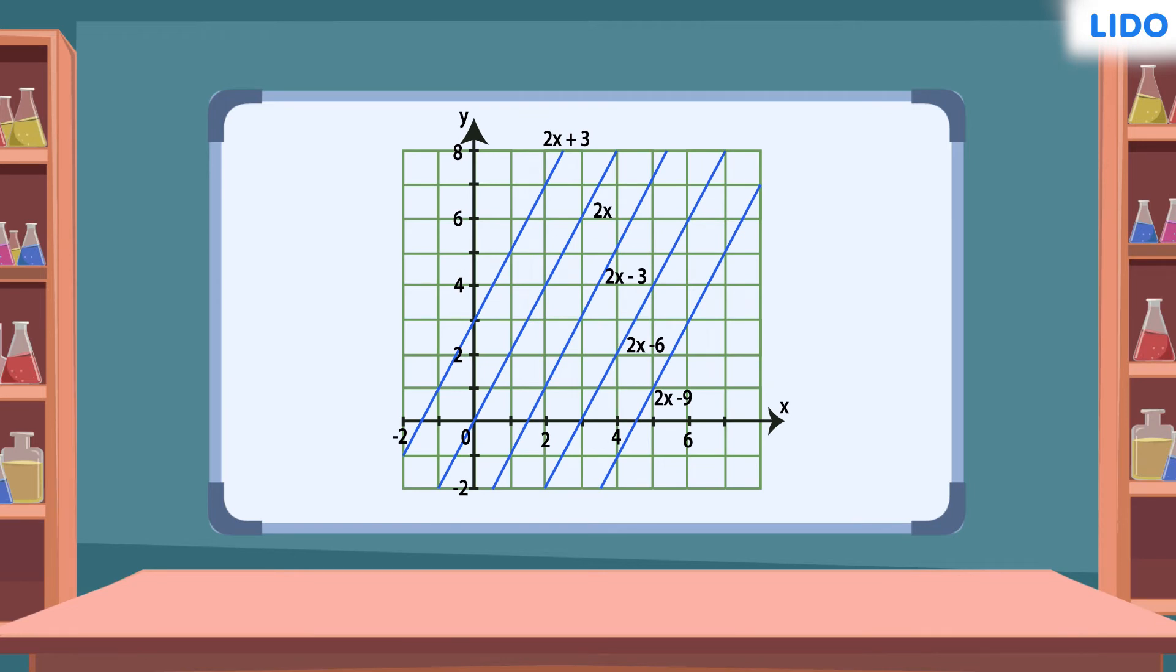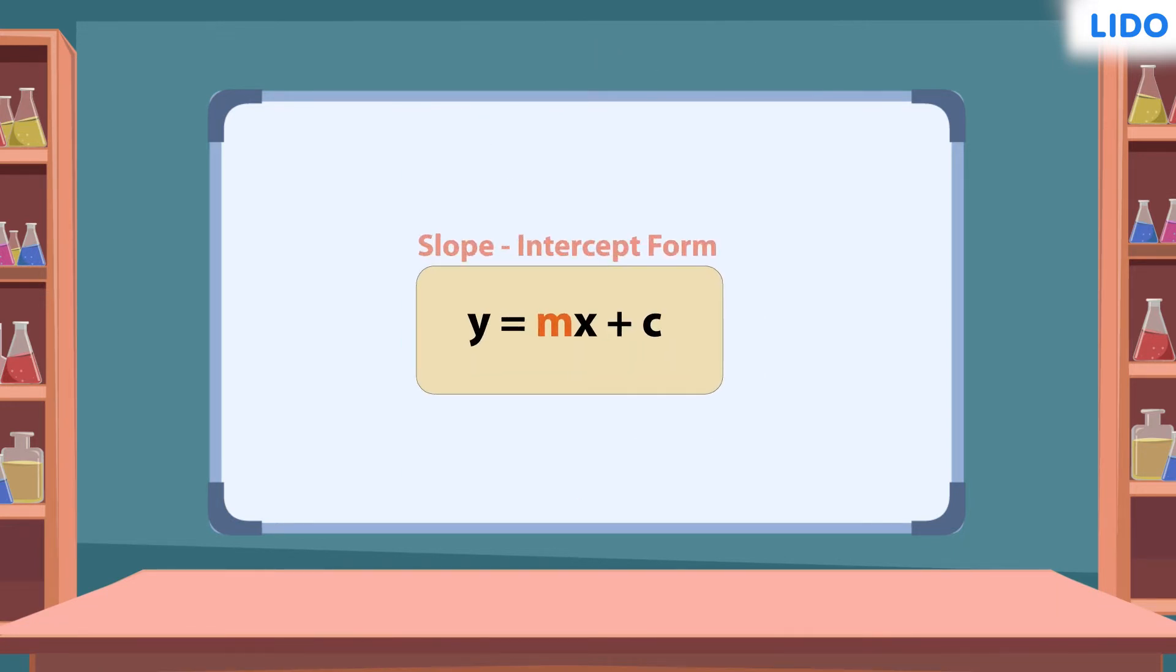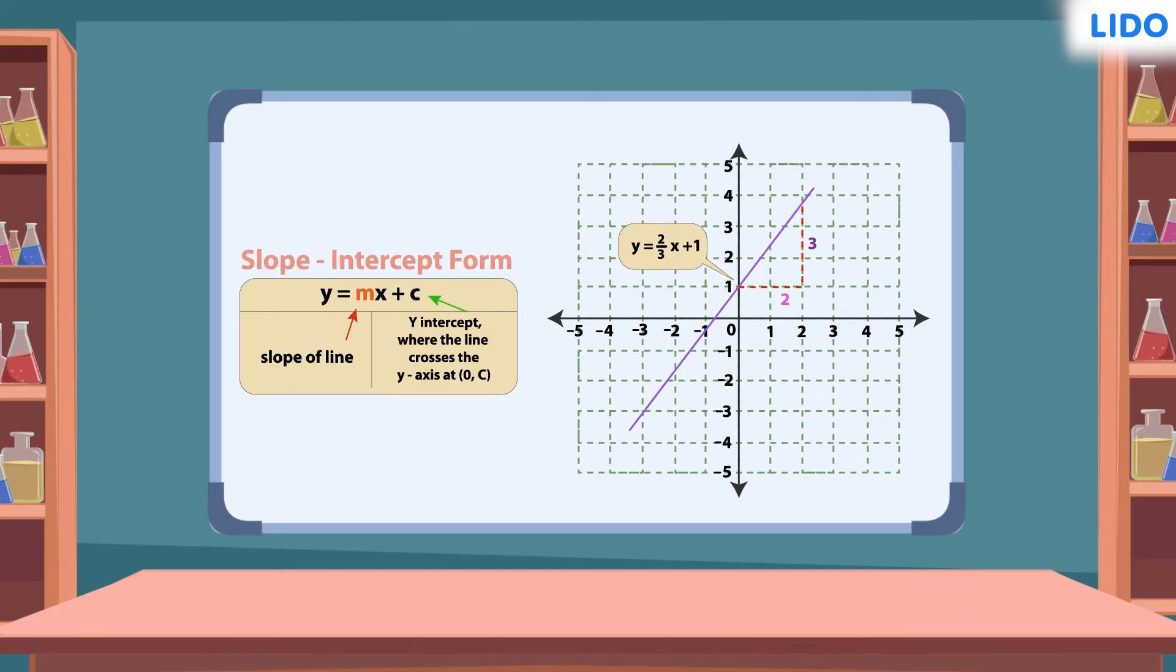Any line is represented by a unique mathematical equation called the linear equation. Equation of a line is given by slope-intercept form. Here, the variable m represents the slope of the line and the variable c represents the point where the line intersects the y-axis or the y-intercept.